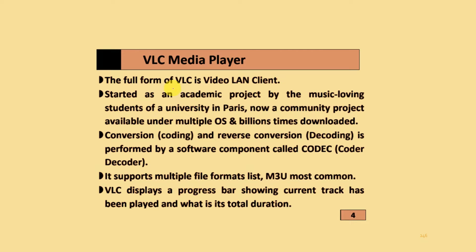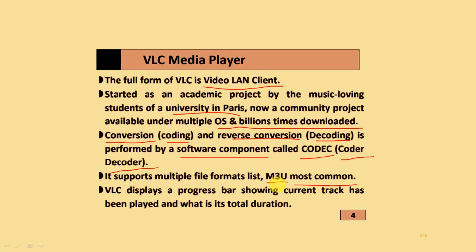The next topic is the VLC player. The full form of VLC is VideoLAN Client. It started as an academic project by music-loving students of a university in Paris and is now a community project available under multiple operating systems, downloaded billions of times. Encoding and decoding — the reverse conversions — are performed by software components called codecs, which stands for coder-decoder. VLC supports multiple file formats like M3U. All latest file formats are supported by VLC, and it displays a progress bar showing the current track being played and its duration.